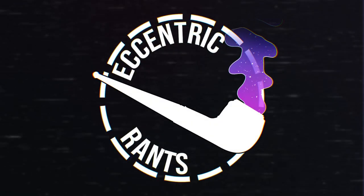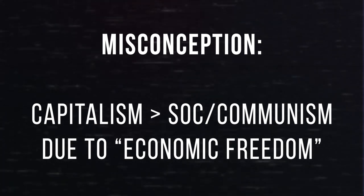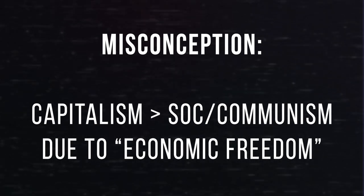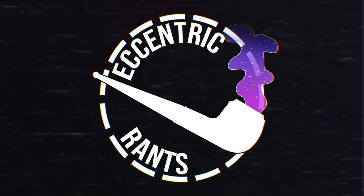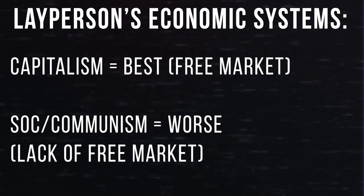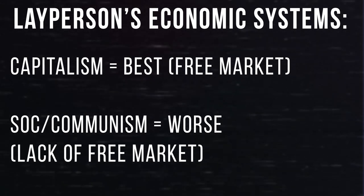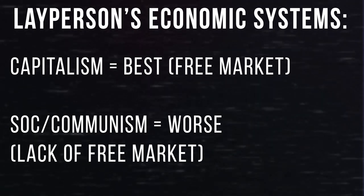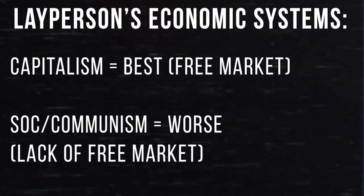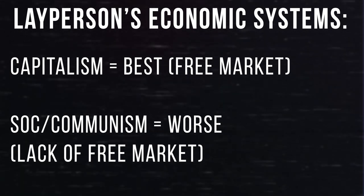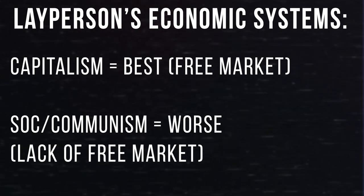When talking about socialism or communism, the common misconception held by most people is that they are suboptimal compared to capitalism because you don't have the same economic freedoms. When a layperson defines the three economic systems, they see it as follows: capitalism is optimal because it utilizes the free market, giving people the most freedom and making it the best economic system. As for socialism and communism, they usually argue that under such systems the state takes over industries and gives the individual less freedom because the state is encroaching on the free market, making such systems suboptimal.